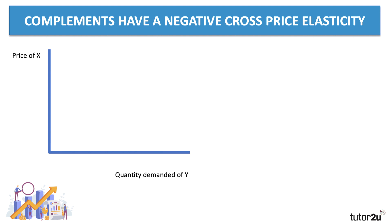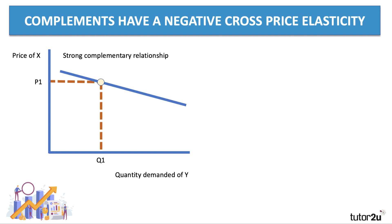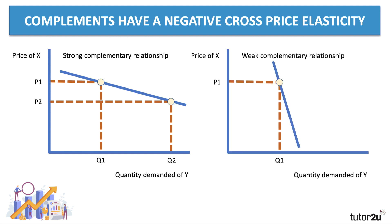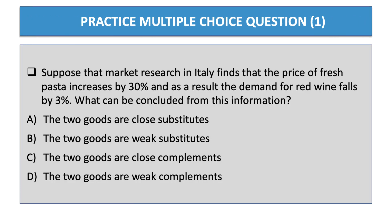Complements have a negative cross price elasticity: if the price of X goes down, people buy more of X and they'll also buy more of a complement Y. A diagram showing a fairly strong complementary relationship would see the price of X fall from P1 to P2 causing quantity demanded of Y to increase substantially. A weaker relationship diagram shows a big fall in price of X leading to only a marginal increase in the quantity demanded of Y.